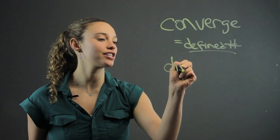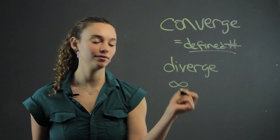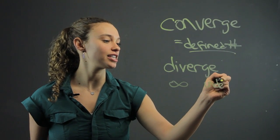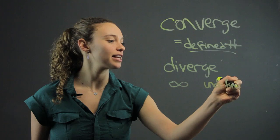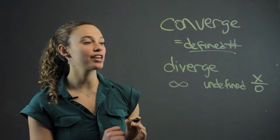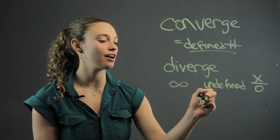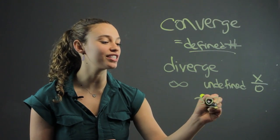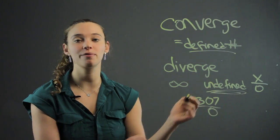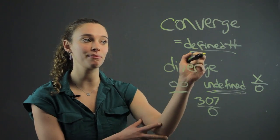We say we diverge towards infinity or an undefined number, which is something like any number over 0. So if you're going towards 307 over 0, you're diverging towards it because it's an undefined number. Or we say we are diverging towards infinity, right? Away from a defined number.